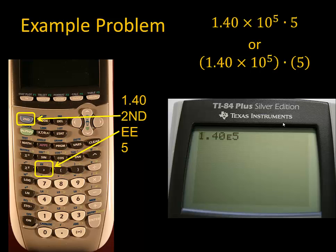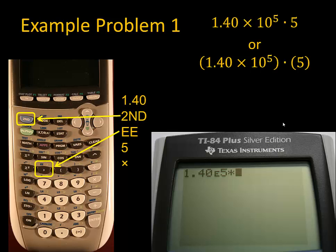But the calculator doesn't know yet that we're done entering the number. We might be adding a second digit to that exponent. As soon as we enter an operation, however, the calculator will know that we're done entering the number, and it will be stored. So the next keystroke is the times button. Now that first number is stored in the calculator, and the calculator is ready for the next number.